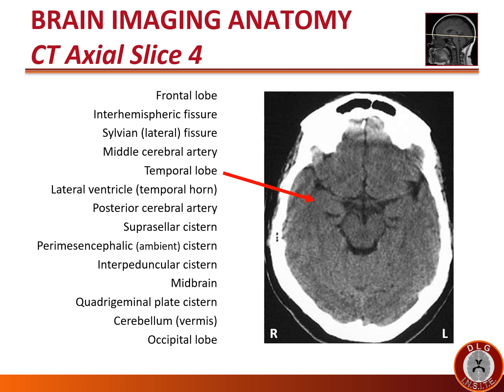At this level laterally we see the temporal lobe. If you see the sylvian fissure on an axial image, just dorsal to it will be the temporal lobe. The small slits of black CSF space in the temporal lobes are the temporal horns of the lateral ventricle. In normal patients, these temporal horns are very small. They only become enlarged with diffuse atrophy of the brain, focal atrophy of the temporal lobe, or when there is compression causing hydrocephalus.